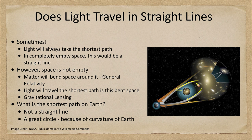So the light takes this curved path. When we look at something from Earth, we see it as straight back, so it seems to come from a certain direction rather than from behind this cluster of galaxies.